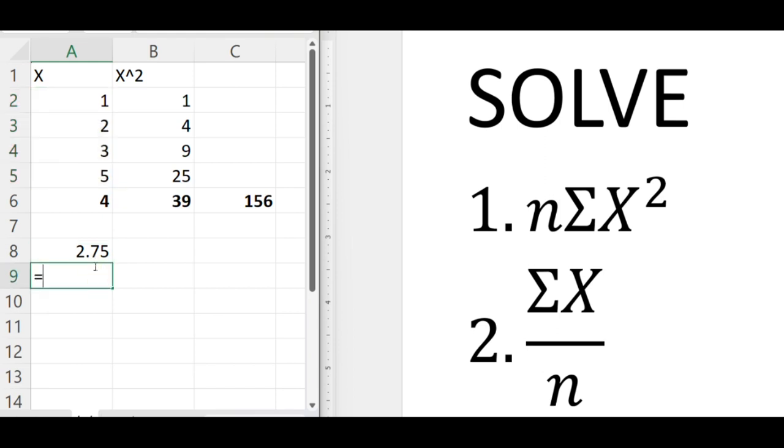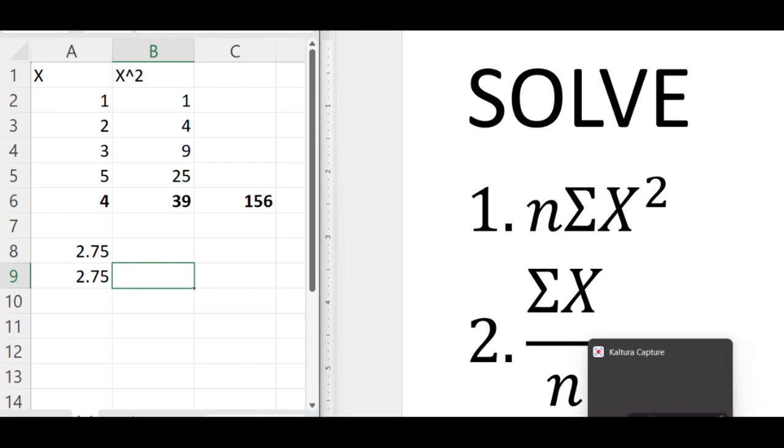And in fact, Excel has a command that we'll learn later, average, that we can get the average of data and we'll see that those two values are equal. So I hope that helps to clarify how you might solve problems when you have both n, the sample size, and the summation operator present in a given problem. Always happy to make additional videos to clarify concepts.